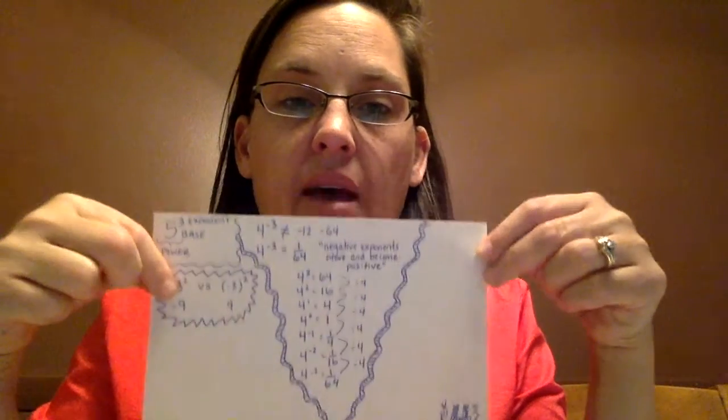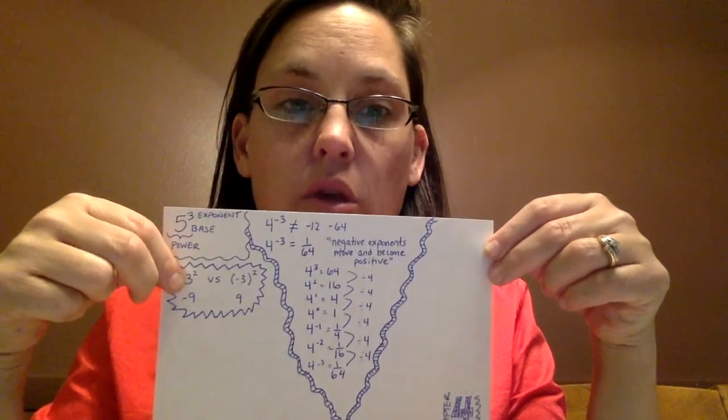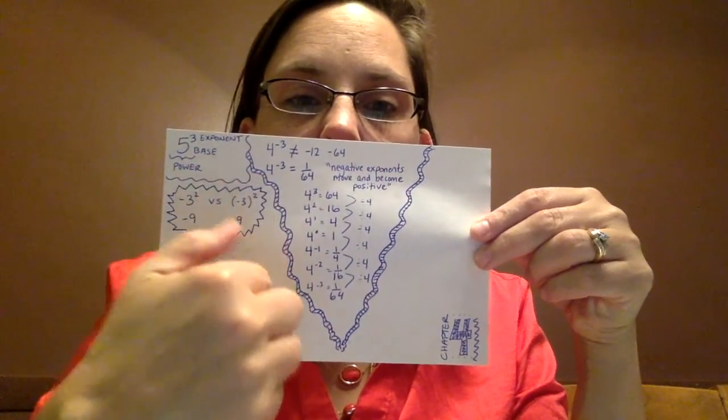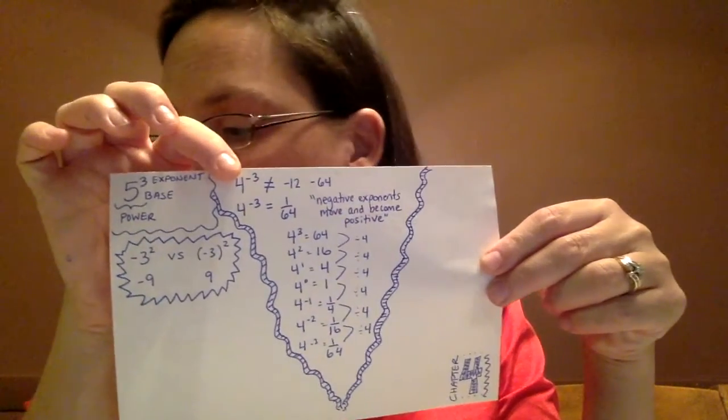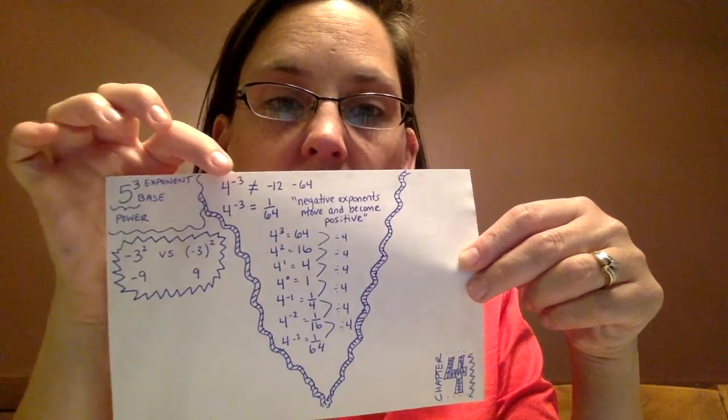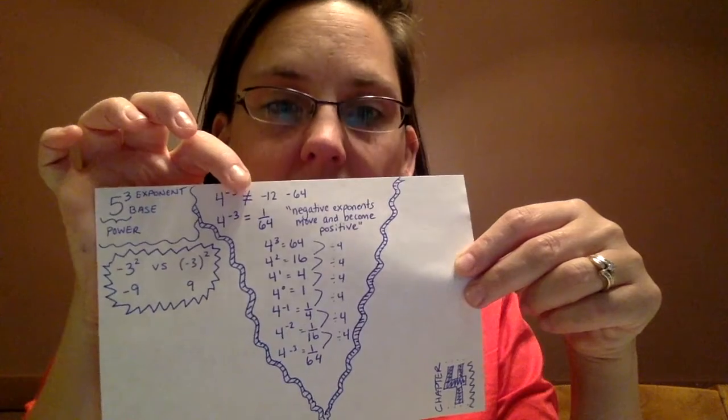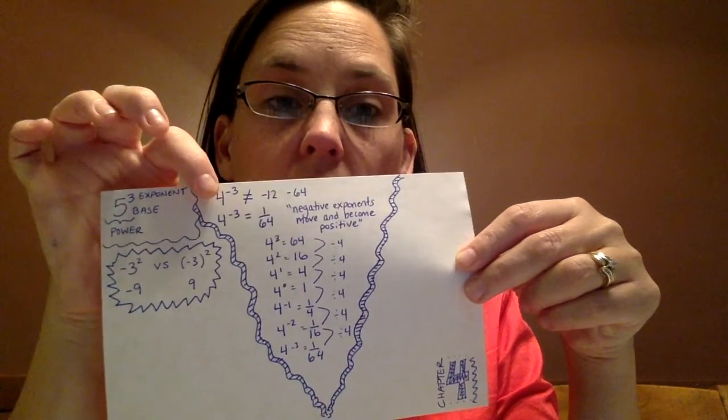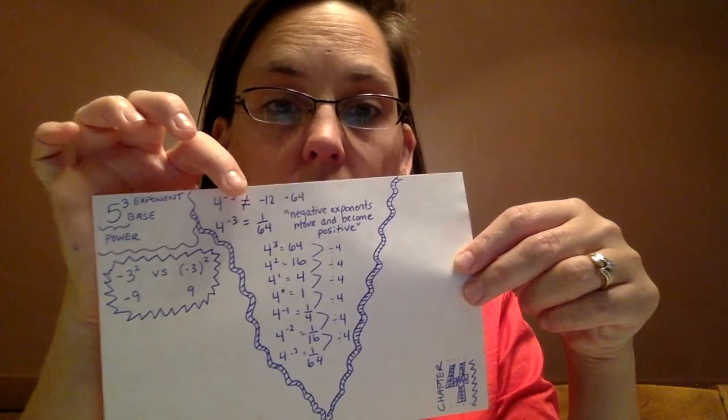You might want to add that to your one sheet so that you remember that as well. So this section in the middle here is basically 4-2. We're going to be dealing with negative exponents. And so right up here at the top, I put 4 to the negative 3 does not equal negative 12. Very common mistake to just multiply the base times the negative exponent, so it's negative 12.